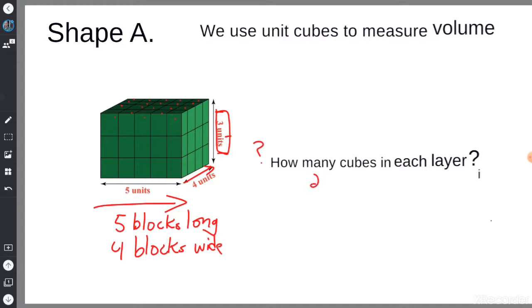If there are 20 cubes in each layer and there are three layers, so I can do 20 times 3, and it would equal 60 cubic units.